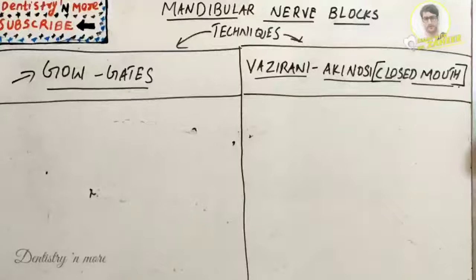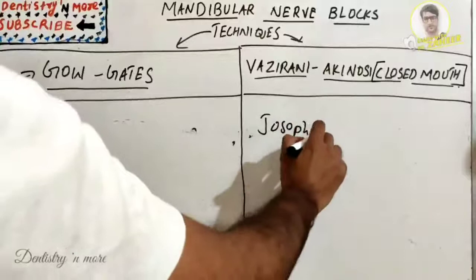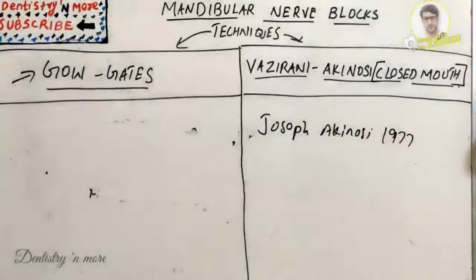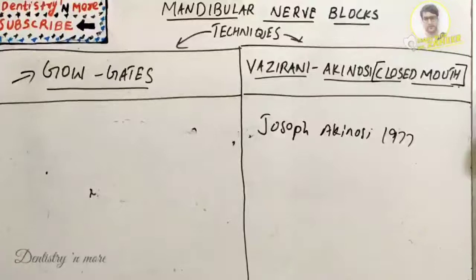The second technique is the Vizirani-Akinosi closed mouth technique, commonly used when the patient's mouth-opening ability is very limited. It was introduced by Joseph Akinosi in 1977 and is used for patients with limited mouth opening due to trismus or ankylosis of the TMJ, since both IANB and Go-Gates techniques require the patient to open the mouth widely.